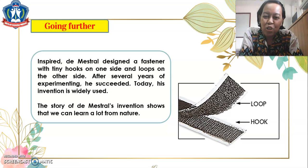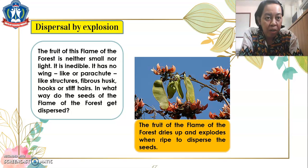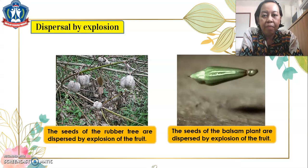Next we have dispersal by explosion. The fruit of the flame of the forest is neither small nor light, it is inedible, and has no wing-like, parachute-like, fibrous, hook, or stiff-hair structures. So how do the seeds of the flame of the forest get dispersed? The fruit dries up and explodes when ripe, dispersing the seeds. Some kinds of fruit dry up and explode when ripe, dispersing seeds far and wide. For example, the seeds of the saga tree, the rubber tree, and the balsam plant are all dispersed by explosion of the fruit.